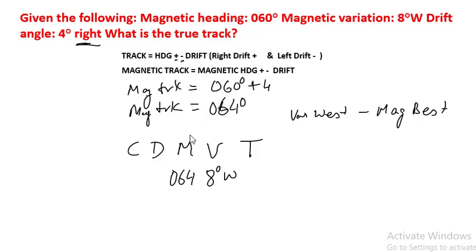Another way is, if it is west, then we are actually subtracting and true value is lesser than magnetic. If magnetic is best means magnetic, in case variation is west, magnetic value is going to be greater than true value. Variation west, magnetic value is more than true value.